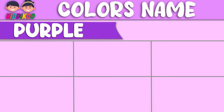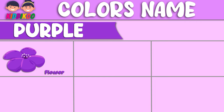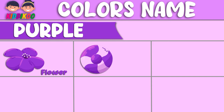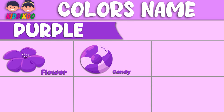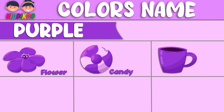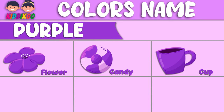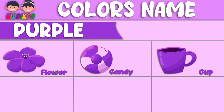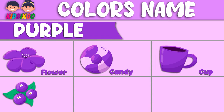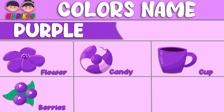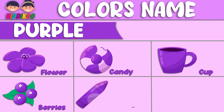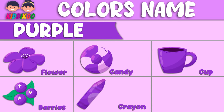This color is purple. Flower — this flower is purple. Candy — this candy is purple. Cup — this cup is purple. Berries — these berries are purple. Crayon — this crayon is purple.